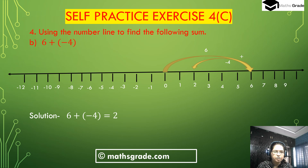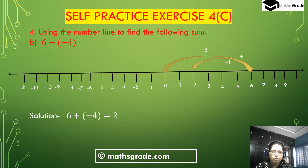Second bit (b): 6 plus minus 4. 6 is a positive integer, so starting from 0 the number goes to the right to 6. Minus 4 is a negative integer, so the number goes from 6 to the left hand side 4 places: 6 to 5 is 1, 5 to 4 is 2, 4 to 3 is 3, 3 to 2 is 4. The number is now at 2. So 6 plus minus 4 equals 2.